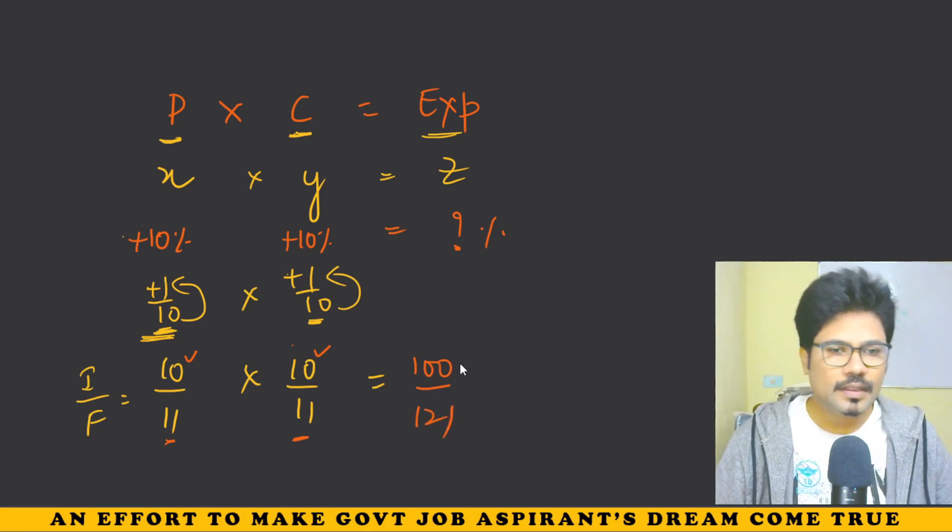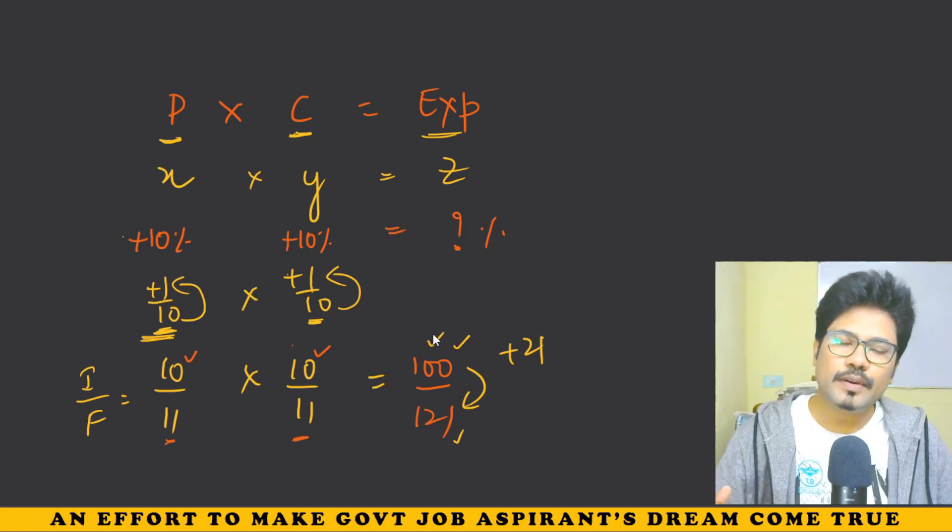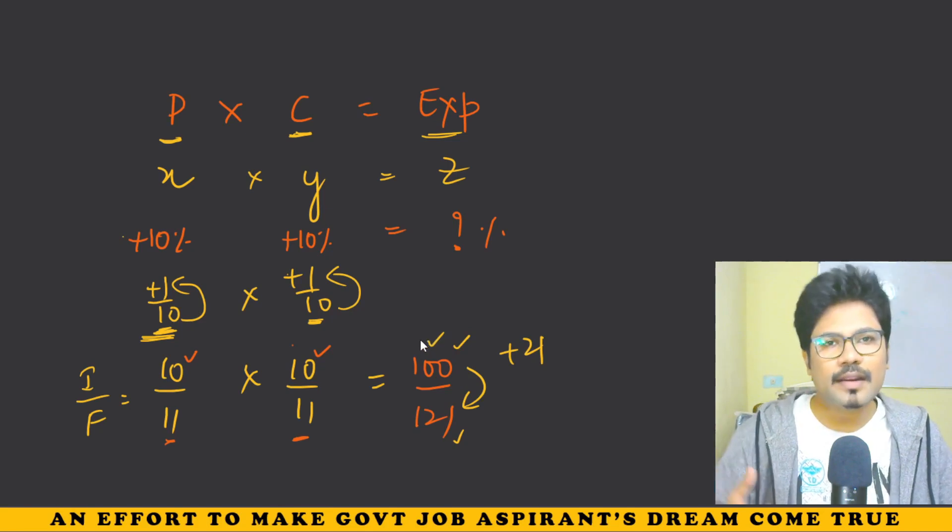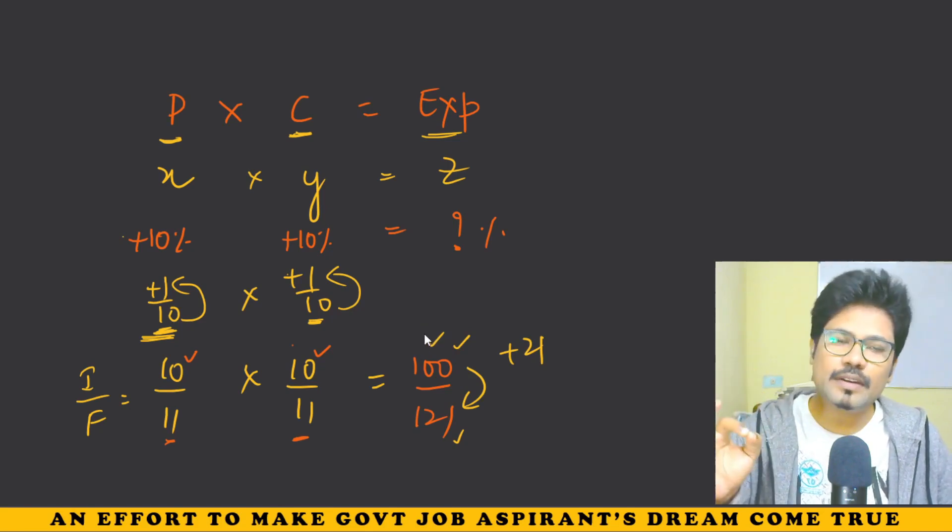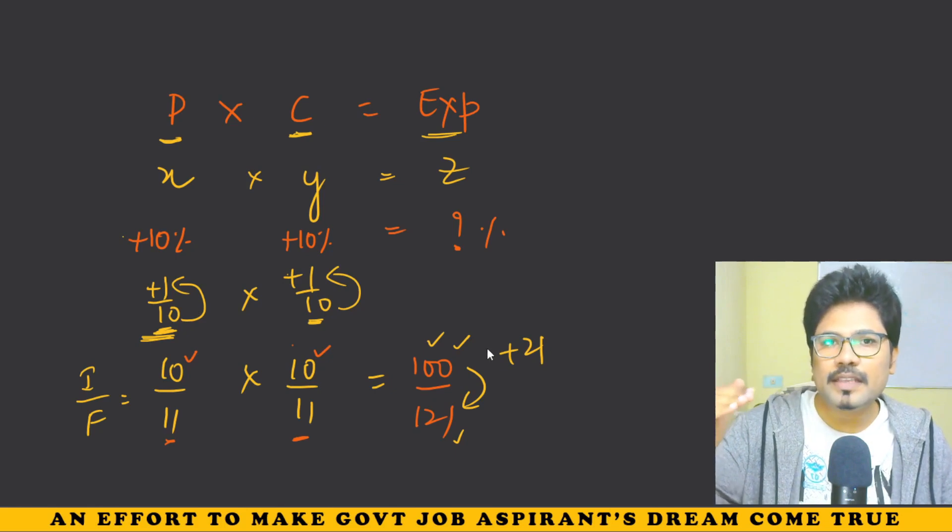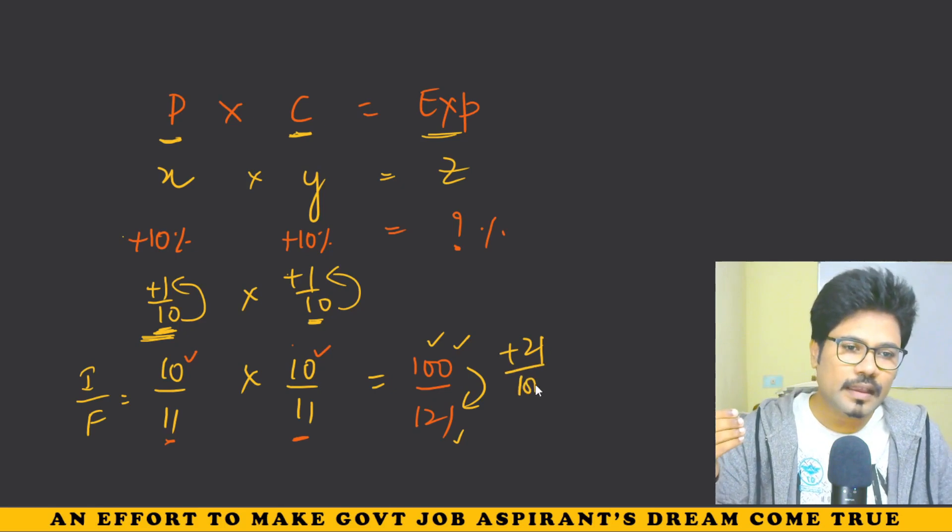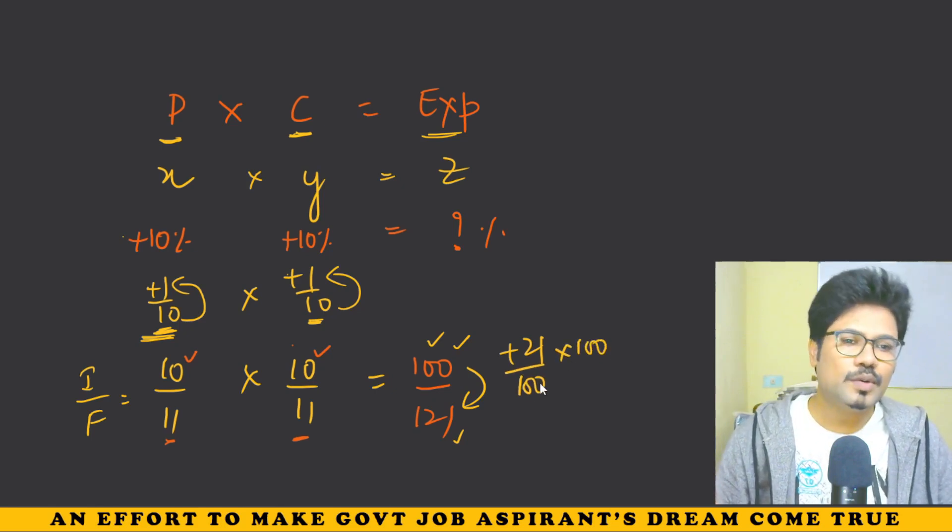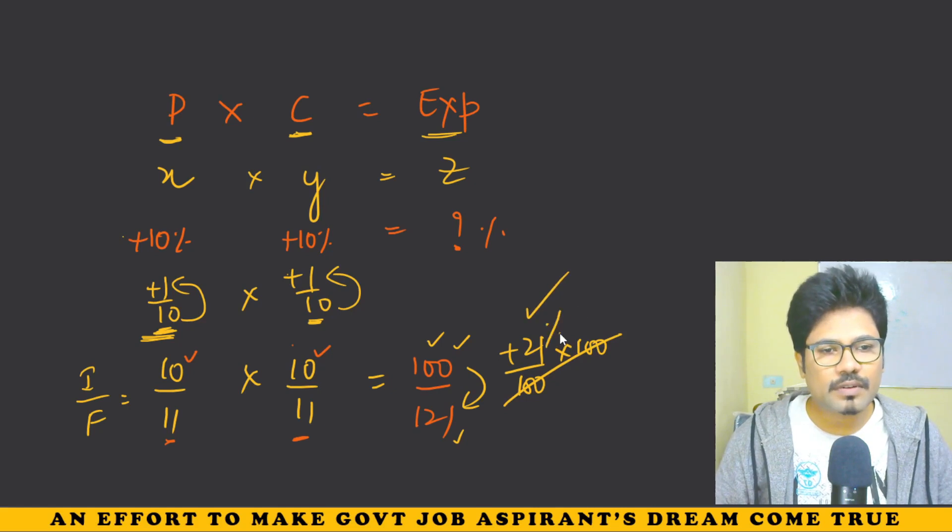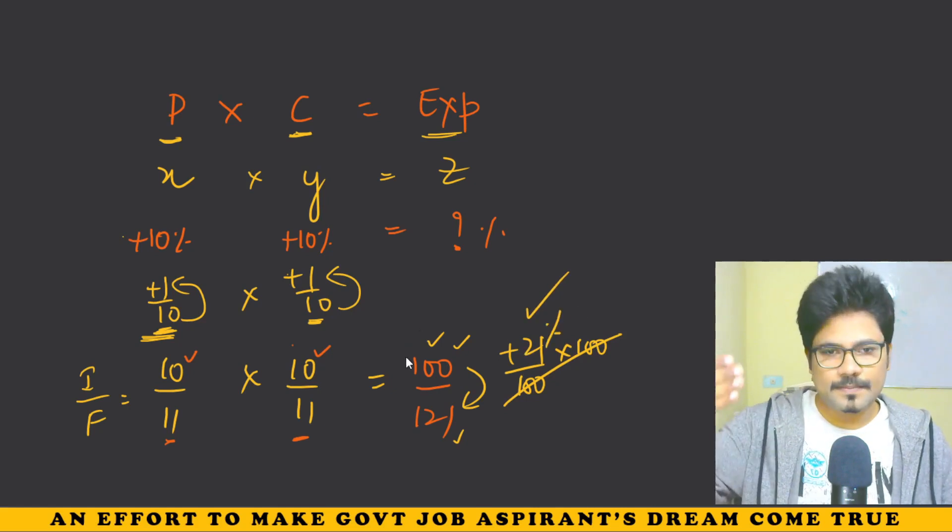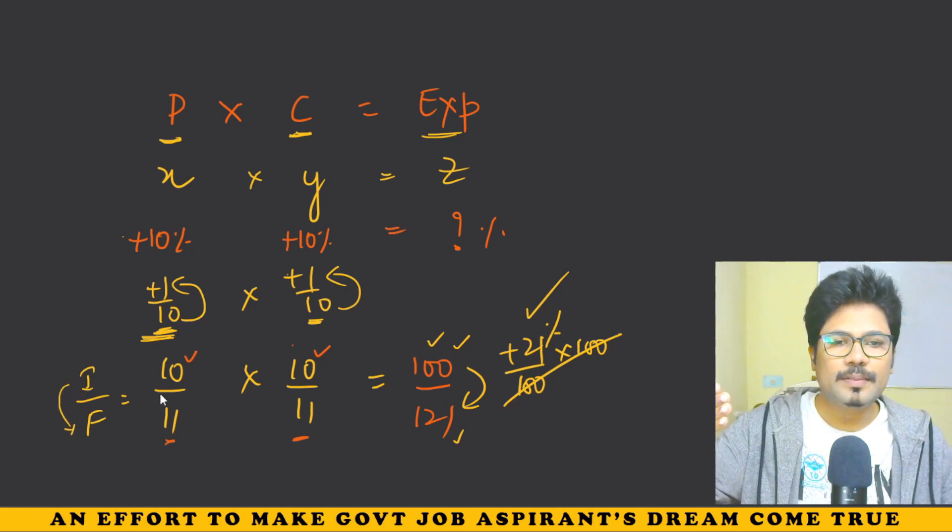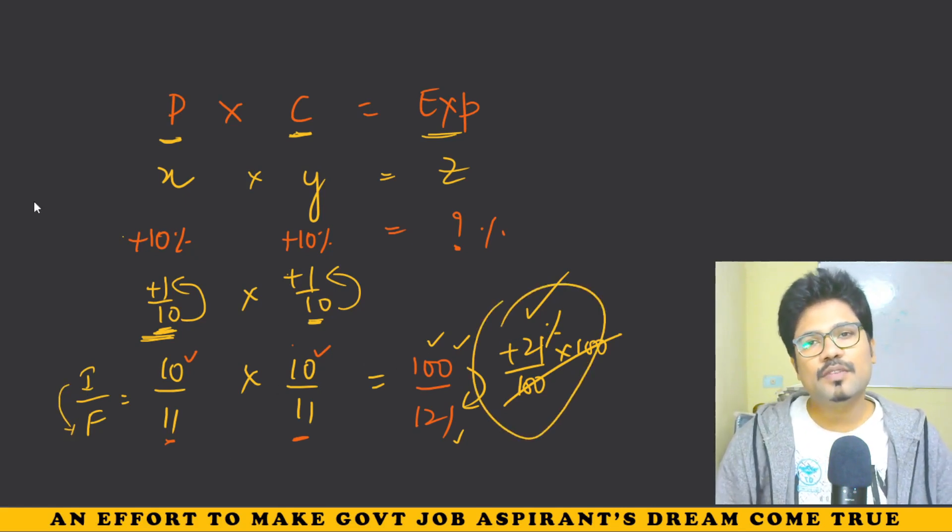So the increase is 21 rupees out of the base of 100. In percentage terms, 100 into 21 by 100 equals 21%. When you multiply these two together, you get plus 21 percent increase. This is in terms of ratio. Now let's see how to get the percentage directly.